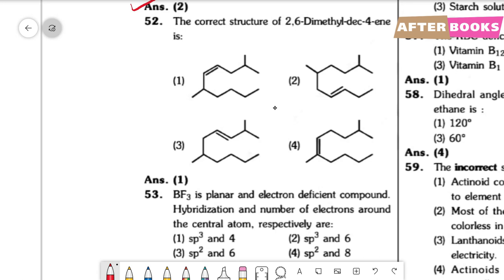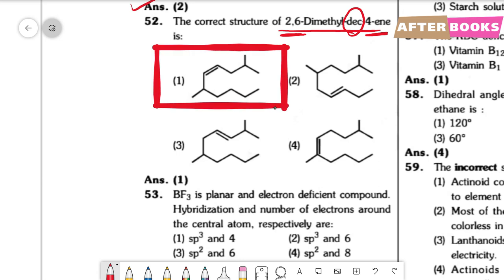Question number 52. The correct structure is 2,6-dimethyldec-4-ene. We need to find the longest carbon chain, which has 10 carbons. Numbering gives: 1st, 2nd, 3rd, 4th, 5th, 6th, 7th, 8th, 9th, 10th carbon. The double bond is at the 4th position. At the 2nd position, one methyl group is present, and at the 6th position, one methyl group is present. So the correct option is option 1.